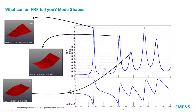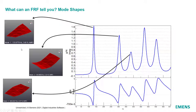The last thing that a frequency response function can give us is an idea of the mode shapes of our system — the pattern of vibration when the structure is excited at its natural frequency. I can use information from multiple frequency response functions and plot that information to see, for example, that this first peak corresponds to some sort of twisting mode, the second one to a bending mode, and the third one might be second twisting. We can do that by looking at the imaginary portion, or the phase, of the frequency response function.